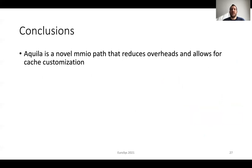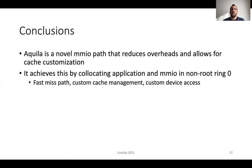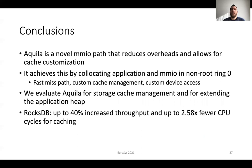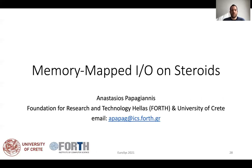To conclude, we propose Akila, a novel memory mapped IO path that significantly reduces IO overheads and provides customization based on application needs. To achieve that, Akila colocates the application and memory mapped IO path in non-root ring 0, a high-privileged domain. This design enables a fast miss path and customization for both cache management and device access. We evaluate Akila as a way to manage the storage cache and to provide heap extension over fast storage devices. With RocksDB, Akila provides up to 40% increased throughput, coming from a reduction of up to 2.58 times in CPU cycles for cache management. With Ligra, Akila results in up to 4 times reduction in execution time. Thank you for your attention.